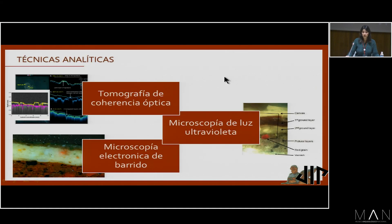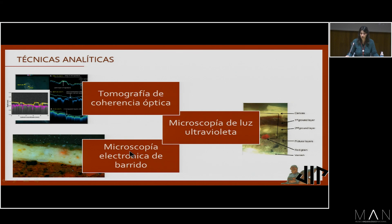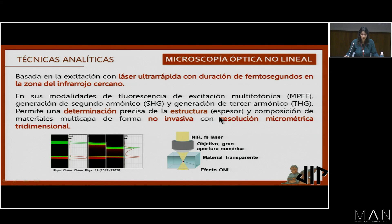En este sentido, existen diferentes técnicas analíticas, como son la tomografía de coherencia óptica, la microscopía de luz ultravioleta o la microscopía electrónica de barrido, destacando que estas dos últimas son técnicas destructivas. En los últimos tiempos, se ha introducido dentro del campo de la ciencia del patrimonio la microscopía óptica no lineal.